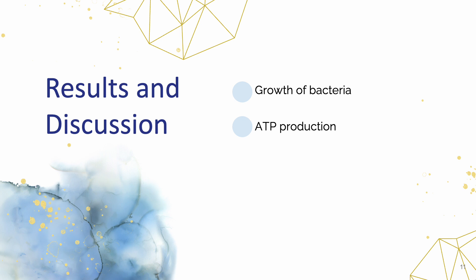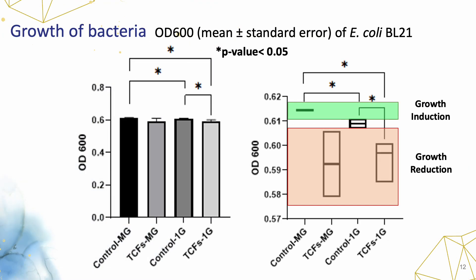Shifting our focus to results and discussion, we will explore the outcomes of bacterial growth and ATP production measurements. Bacterial cell growth measured by OD600 for samples under the influence of TCFs and their controls in both Earth gravity and microgravity are shown in these bar and box graphs. The results showed that the microgravity environment increased bacterial growth up to 1.4% compared to the 1G condition. While under the influence of TCFs, there were no significant differences between samples in microgravity and Earth gravity. In other words, microgravity significantly induced bacterial growth, and TCF treatment inhibited this trend. The growth of bacteria also reduced under TCF treatment in both conditions; TCFs reduced the growth rate by about 2.4% under normal gravity compared to the control.